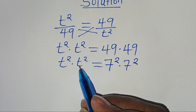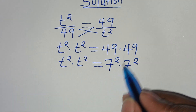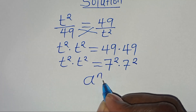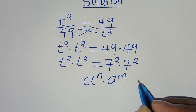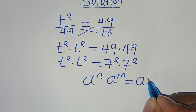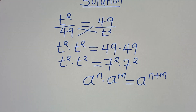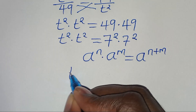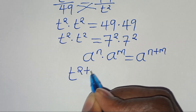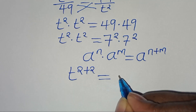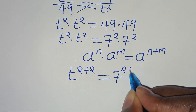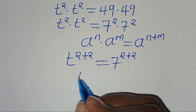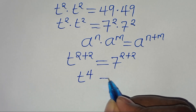We have t² times t², or 7² times 7², which is in the form of a to the power of n times a to the power of m. We can express this as a to the power of n plus m. So this implies t to the power of 2 plus 2 equals 7 to the power of 2 plus 2.